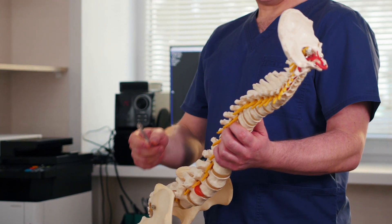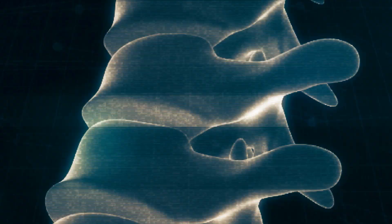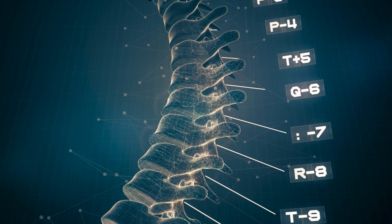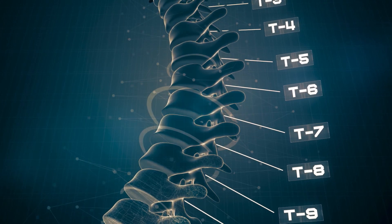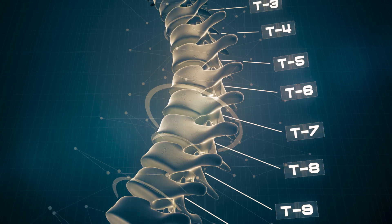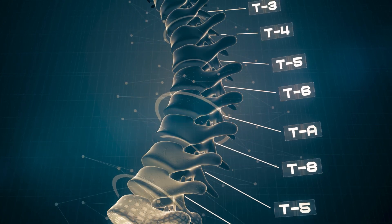Intervertebral discs sit adjacent or between two bones. The disc consists of a tough, durable outer annulus and a soft gel-like interior called the nucleus. The discs are made up of water, collagen fibers, and proteoglycans.